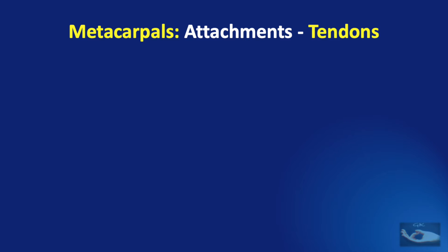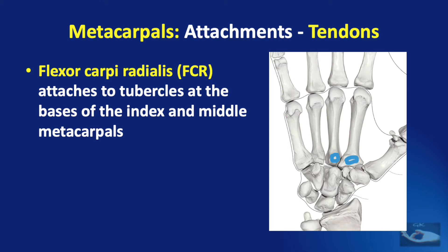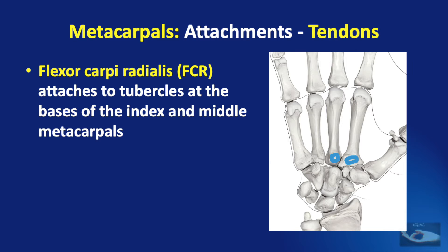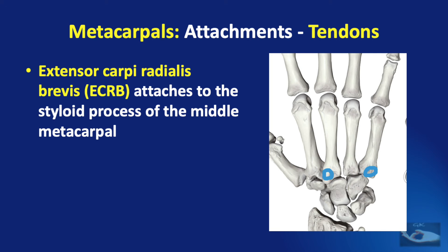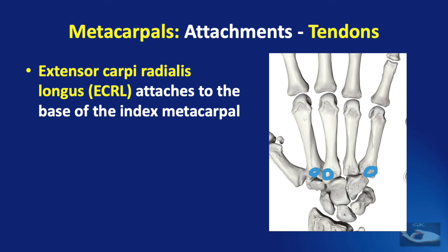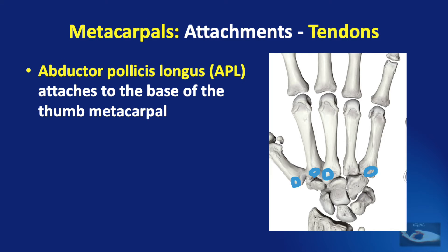The tendons attaching to the metacarpals are: the flexor carpi radialis attaches to tubercles at the base of the index and middle finger metacarpals on the flexor aspect; the extensor carpi ulnaris attaches to a tubercle at the base of the little finger metacarpal on the dorsal side; the extensor carpi radialis brevis attaches to the styloid process of the middle metacarpal on the dorsal aspect; the extensor carpi radialis longus attaches to the base of the index finger metacarpal; and the abductor pollicis longus attaches to the base of the thumb metacarpal on the dorsal aspect.